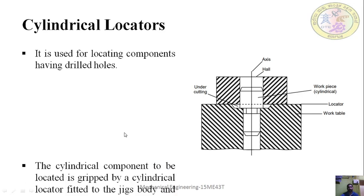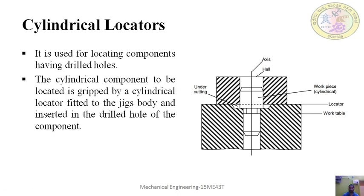Cylindrical locators: cylindrical locators are used for locating a workpiece which already has a hole. If the workpiece has a hole, the locator has a cylindrical bush that will fit into the hole provided in the workpiece. That will fix the position of the workpiece and arrest further motion. After that, the workpiece will be firmly clamped to the worktable. This kind of cylindrical locator is used when there is a hole in the workpiece. It is used for locating components having drilled holes.